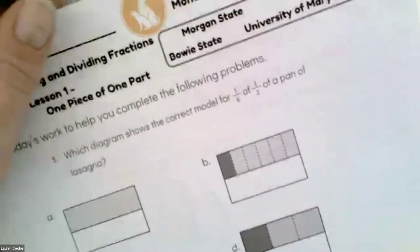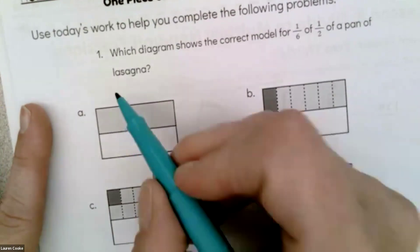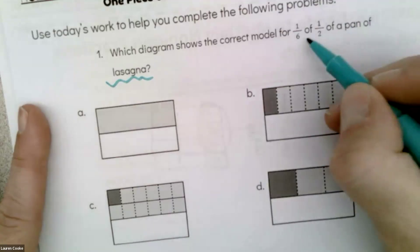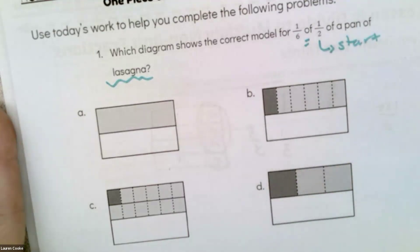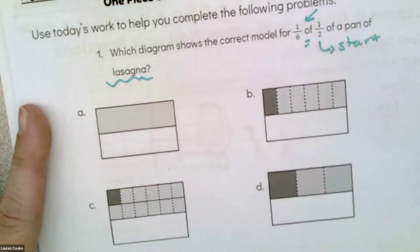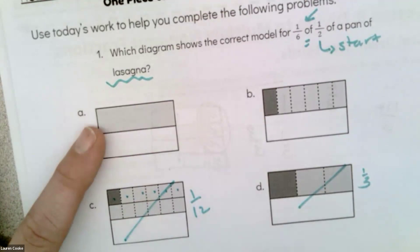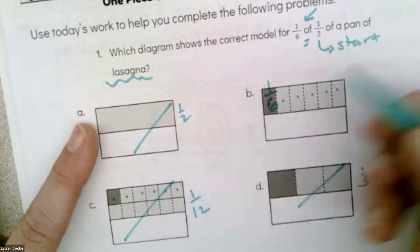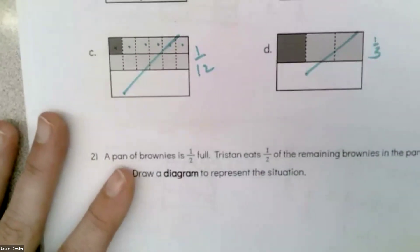Let's start the first problem. Which diagram shows the correct model lasagna? We want 1/6 of 1/2. When it says 'of,' I know I should start with the 1/2. They all have 1/2, so that's great. Then from my 1/2, I want to split it into sixths. This is into thirds, so no. This is in twelfths, so no. Then this is just a half, so no. And then this is 1, 2, 3, 4, 5, 6. This is 1/6, and that is the correct answer.